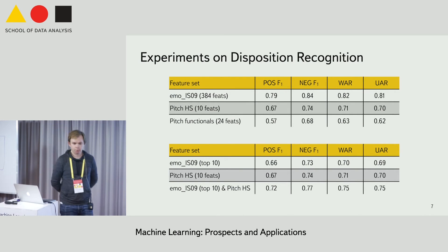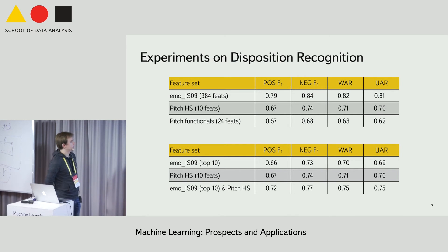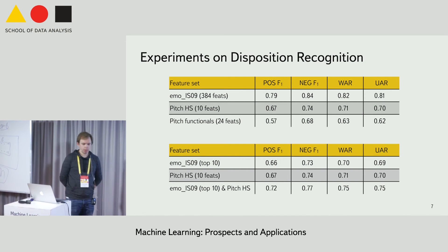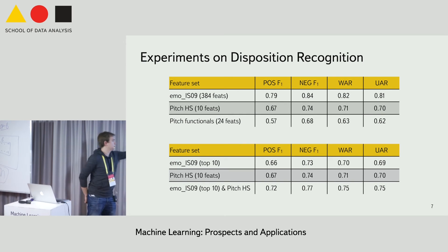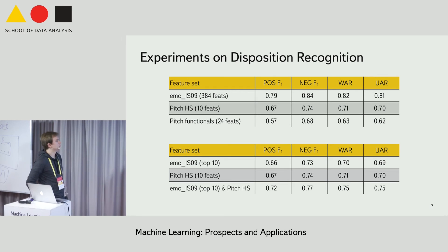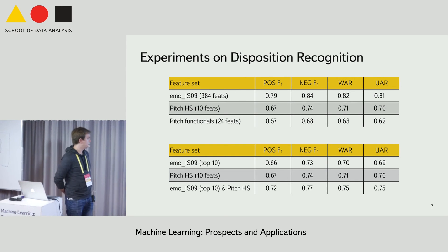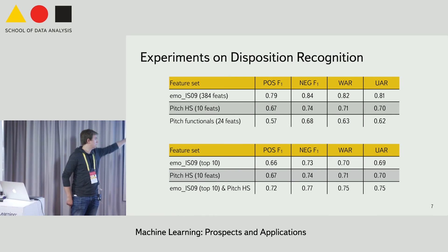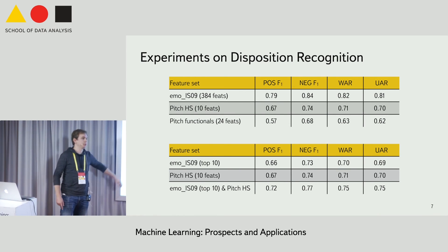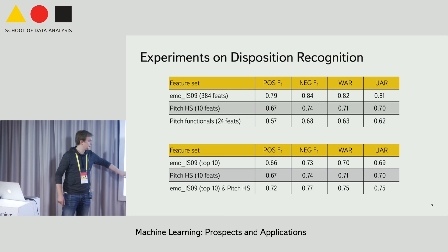The proposed feature set was compared to two baselines. The first baseline is more of an upper bound — a very rich feature set from the InterSpeech emotional challenge, extracted from 16 low-level descriptors. The lower bound is the statistical functionals extracted from the pitch contour only. The proposed feature set is much better than the functionals only, but still behind the reference set. The last result is the comparison to the top ten features from the reference set, which shows almost equal performance. And what is more interesting is that the combination of these two feature sets improves the posterior results.